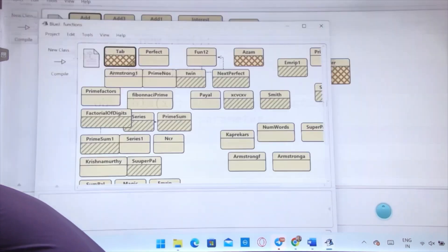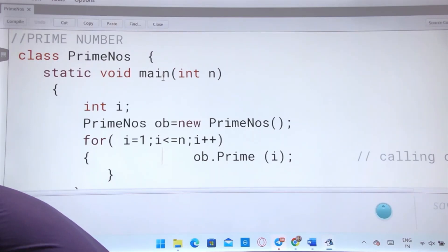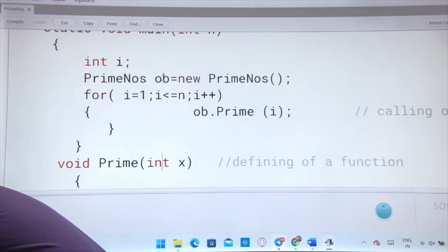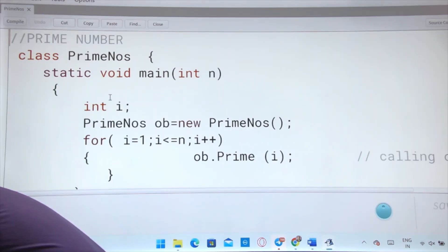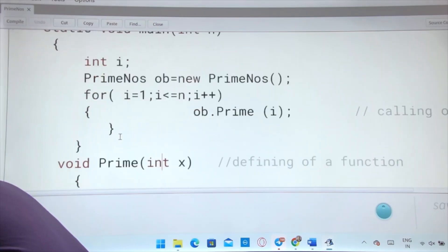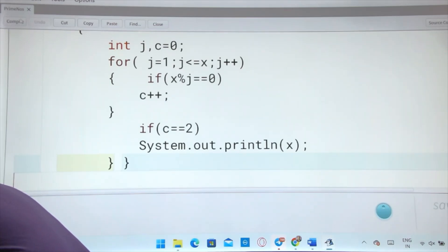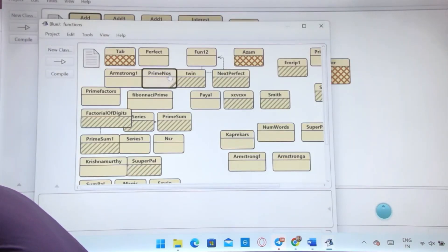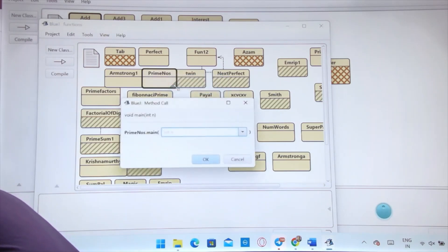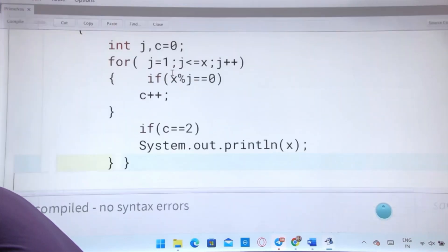Next program is prime number from one till i. In most programs I have created object. What I wanted to show you - if you can see, I have created class name PrimeNumbers. PrimeNumbers ob equals to new PrimeNumbers. ob dot prime i. I did this whole work. Once I am executing, then I will be back to my explanation. Suppose I have given 10, you can see all prime numbers 2, 3, 5, 7 came up. Look, if you can see the code again.